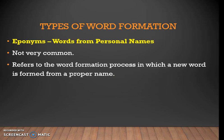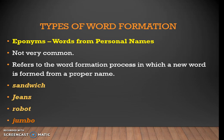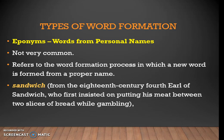The last type is eponyms — words derived from personal names. An eponym denotes the name of an object or activity which is also the name of the person who created it or did it. It refers to word formation in which a new word is formed from a proper name. Examples include sandwich, jeans, velvet, and jumbo. Sandwich entered the English language dictionary in the 18th century.